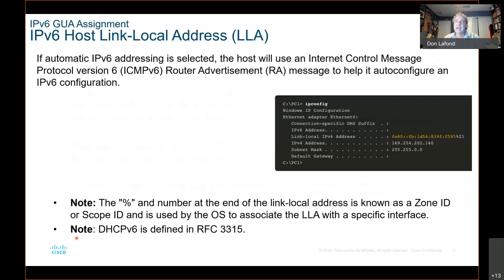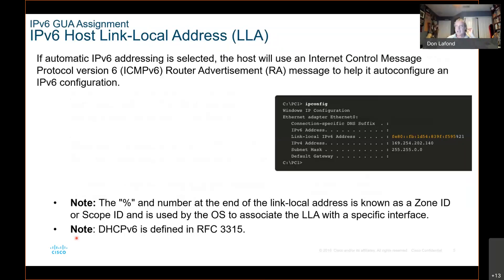Some of you are saying right now, well, you got a local link address there, an FE80 link. But remember, that local link is automatically created as soon as you connect a host to a network. It can only communicate within the network, and those ICMPv6 advertisements are only used to communicate between the different routers.